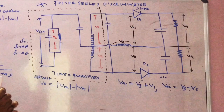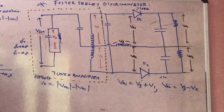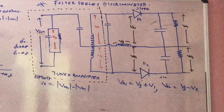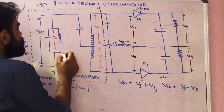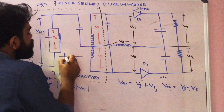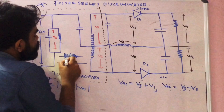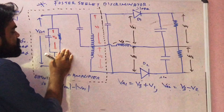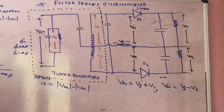Good morning students. We are going to talk about the Foster Seeley Discriminator. The Foster Seeley Discriminator is basically a phase discriminator. It is one of the most efficient FM demodulators. Our output is the original modulating signal.